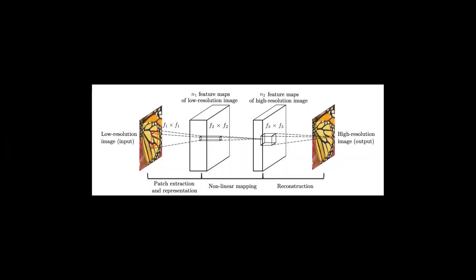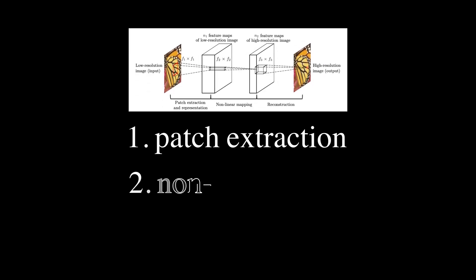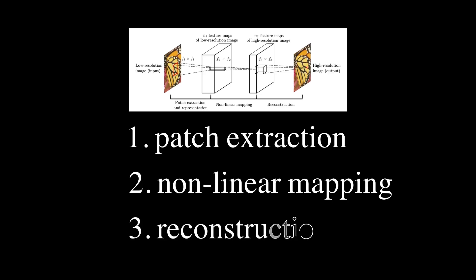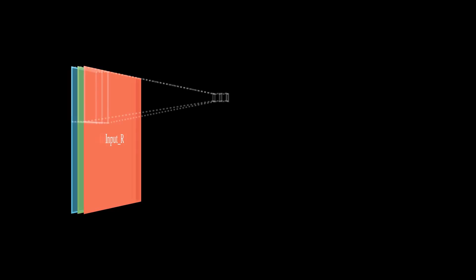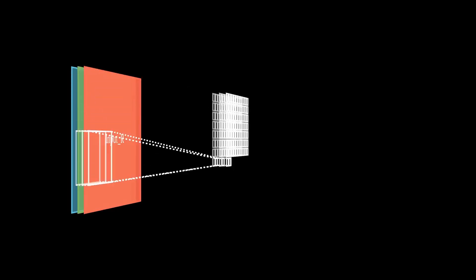Conceptually, SRCNN can be broken down into three separate steps. Patch extraction, nonlinear mapping, and reconstruction. During patch extraction, the input images convolved with a series of filters in a convolutional layer like we talked about earlier. Each of these extracted N1-dimensional feature from the patch of the image where they were calculated over. This operation produces what are known as feature maps for the input image.